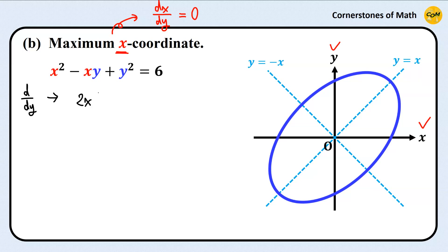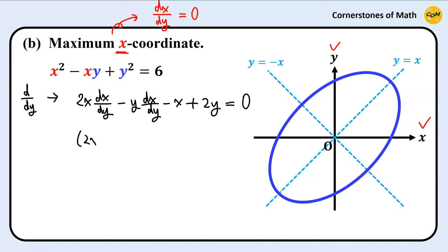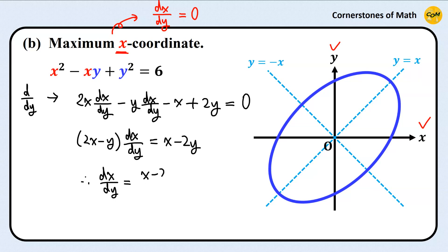Differentiating with respect to y, we have 2x times dx over dy by the chain rule. Then, we apply the product rule: derivative of x with respect to y times y, minus x times the derivative of y with respect to y, which is just 1. Then, derivative of y squared with respect to y is 2y, equals 0. So, we have 2x minus y times dx over dy equals x minus 2y. Therefore, dx over dy equals x minus 2y divided by 2x minus y.